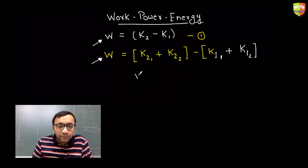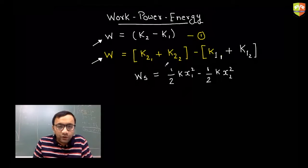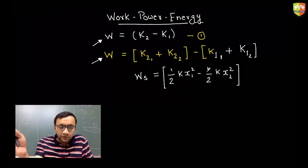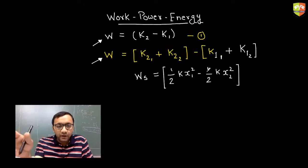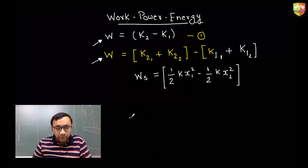Remember the work done by the spring force? We derived it to be ½kx₁² minus ½kx₂², where x₁ is the initial deviation from its natural length and x₂ is the final deviation. We're going to use this again and again. x₁ and x₂ can be extension or compression — it doesn't matter.